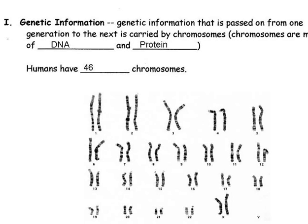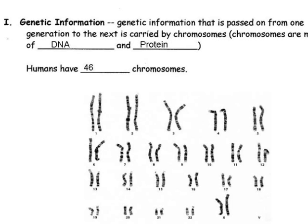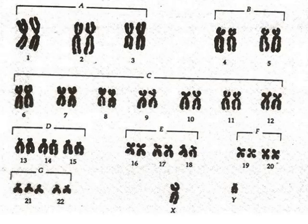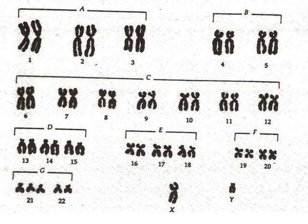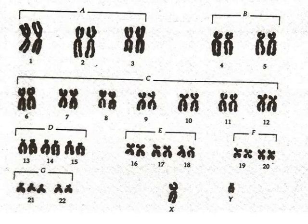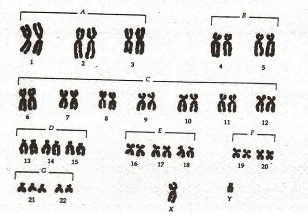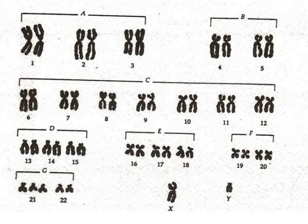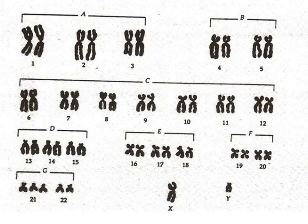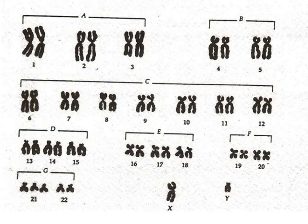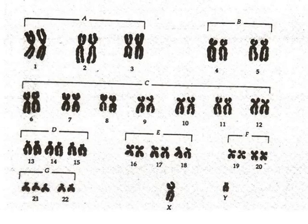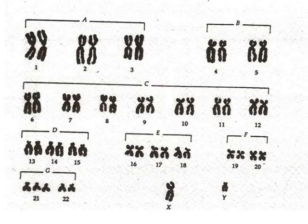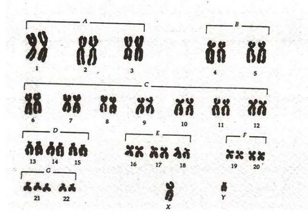Only those traits that are said to be dominant are actually expressed in the organism. Take a look at this karyotype. What is the gender of this person? Look at the chromosomes pictured in the bottom right-hand corner. Those chromosomes are the sex chromosomes. This person has an X chromosome and one Y chromosome. Therefore, this person is male.